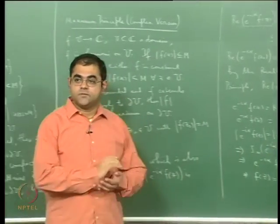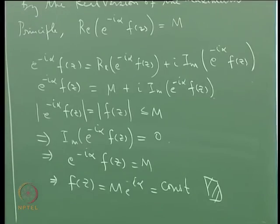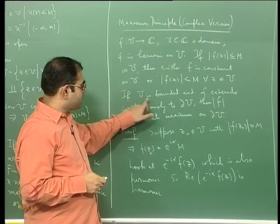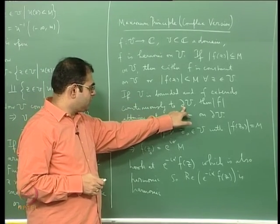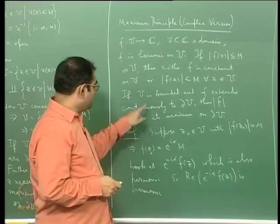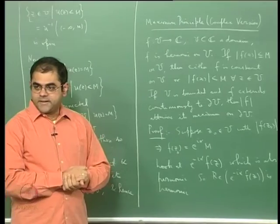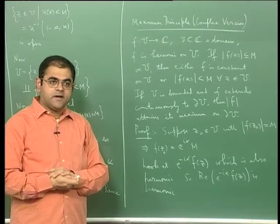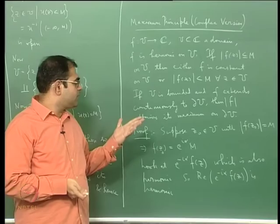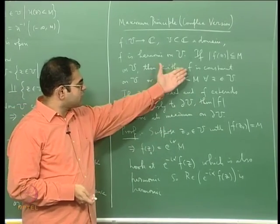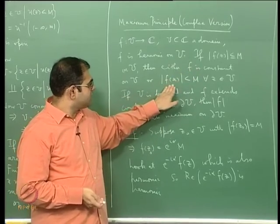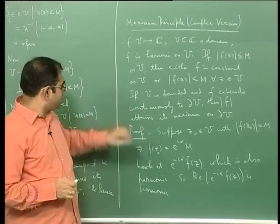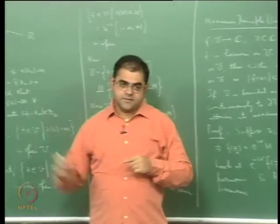That completes the proof of the complex version. For the second part, if U is bounded, the boundary of U is also bounded, and U union its boundary is both bounded and closed, hence compact. Then |f|, being continuous on this compact set, attains its bound. If f is not constant, |f| does not attain its bound in the interior, so it must attain its bound on the boundary. The second part follows just as in the real case.